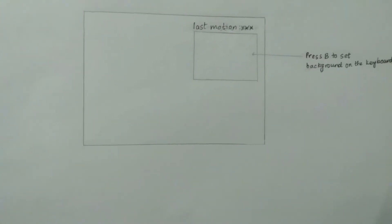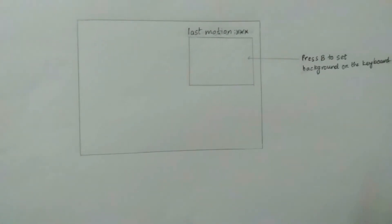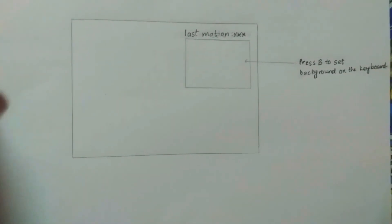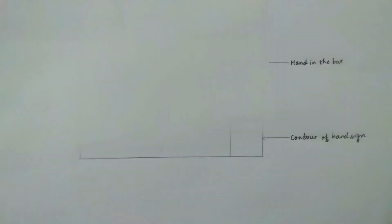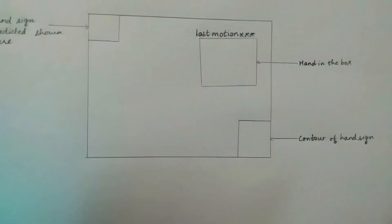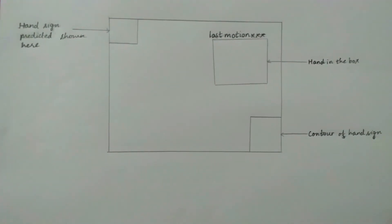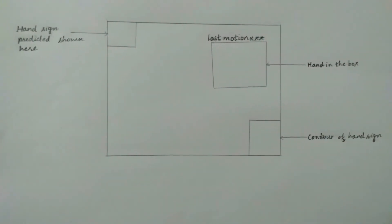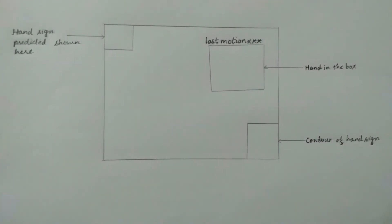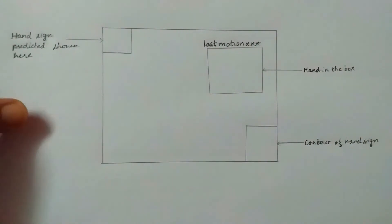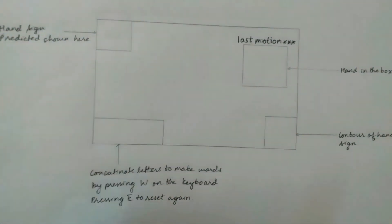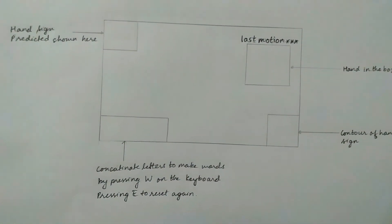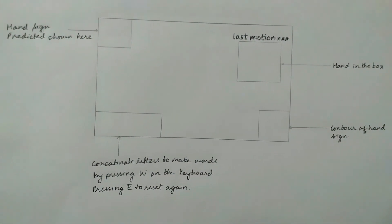We made a paper prototype of our goal product. The window will have a green rectangular box at the top right corner where you place your hands to give sign input. The translated letters and numbers are displayed on the top left corner, and concatenated words and numbers on the bottom left.